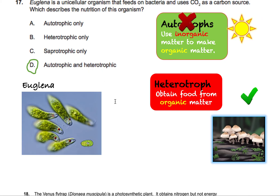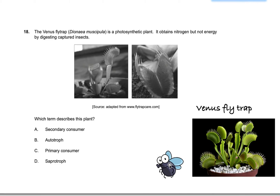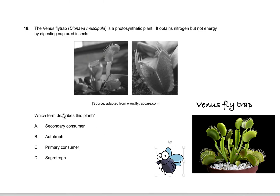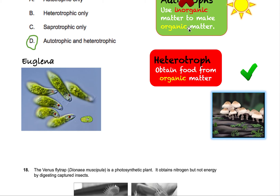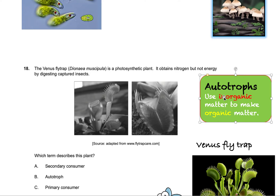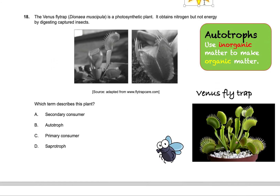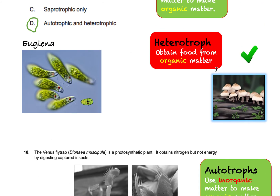Even though it really seems like the Venus flytrap should be both autotrophic and heterotrophic, there is no such option — because they are not both. They're only one. They can definitely do photosynthesis, so they're definitely autotrophic: they can use sunlight to make energy and survive. That's definitely the case. Now let's look at heterotrophic.